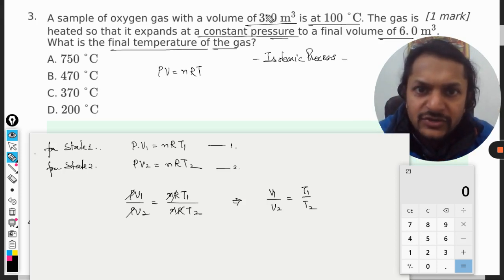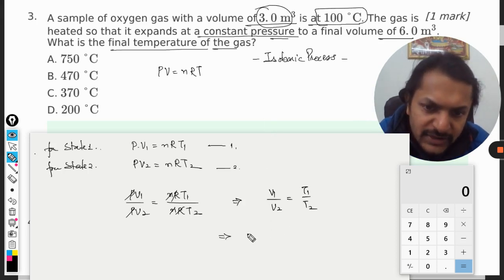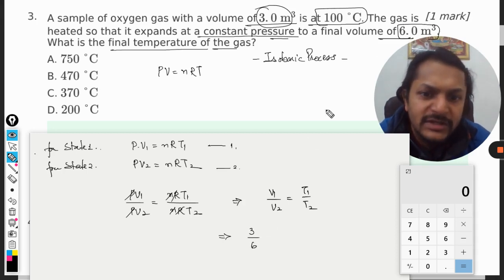This is the equation where we are now going to substitute the values. For state 1 it was 3 m³ volume and 100°C. So on substituting, it will be 3 divided by 6, because now final volume is 6.